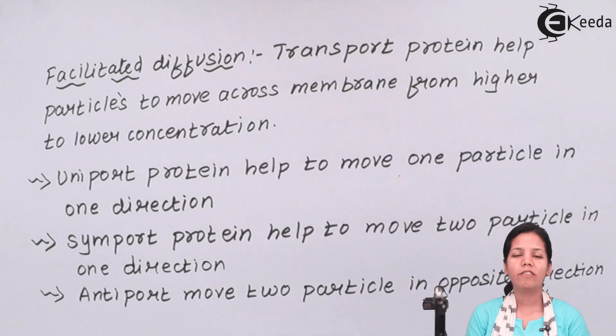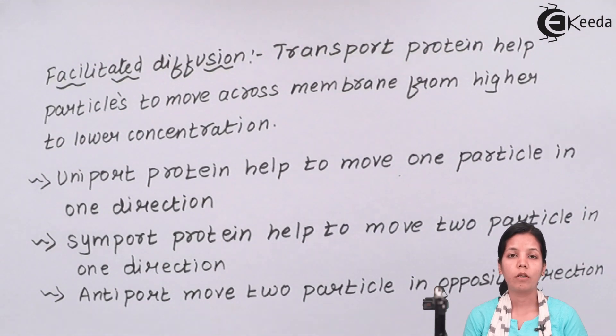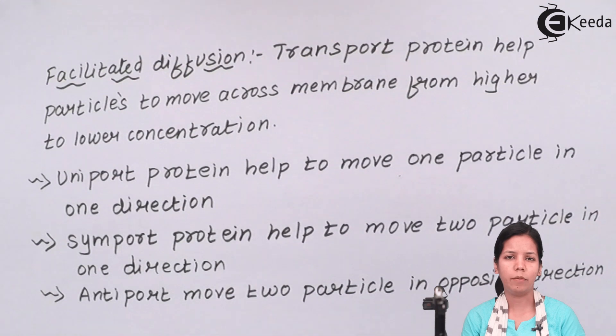Students, in this part of the chapter, we have studied about the types of diffusion. One was simple diffusion, which did not require any protein. And another was facilitated diffusion, which required the help of protein. I hope we all are clear with this concept of simple diffusion and facilitated diffusion. Thank you.